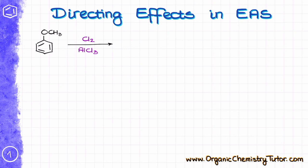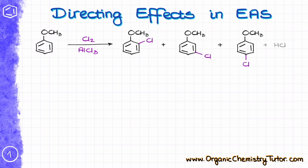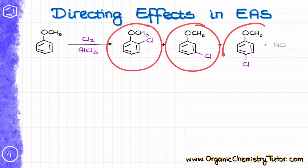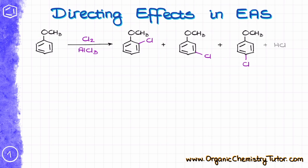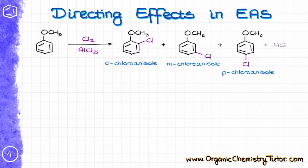Let's start by looking at this reaction. Since this is no longer a simple benzene molecule, we can make three different products. We can make this one, this one, and this one. When I'm talking about three products, I only mean the organic products — we don't really care about the HCl, which is our co-product. We are going to call them the ortho-product, the meta-product, and the para-product.